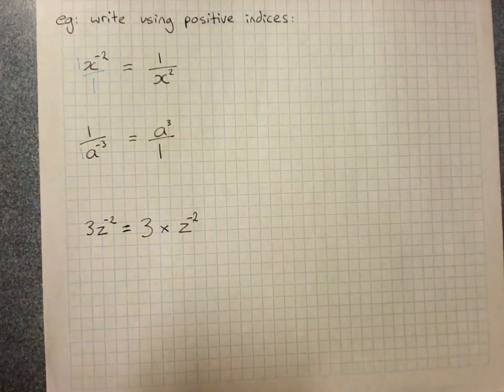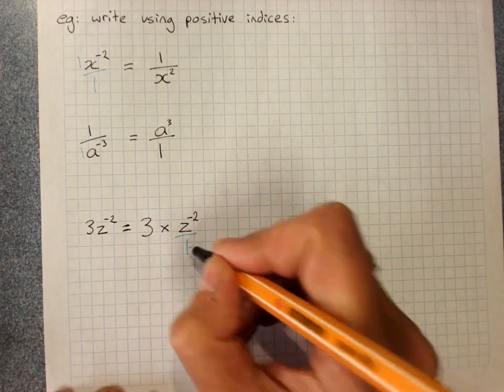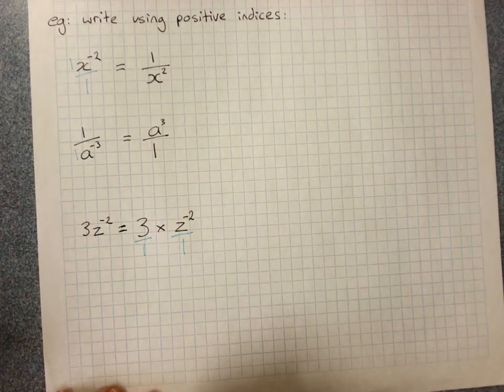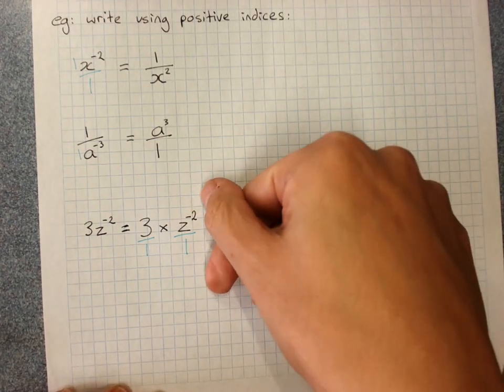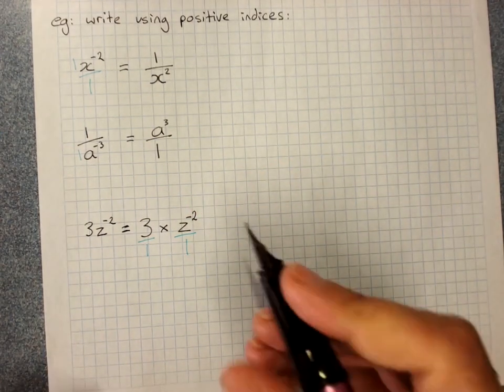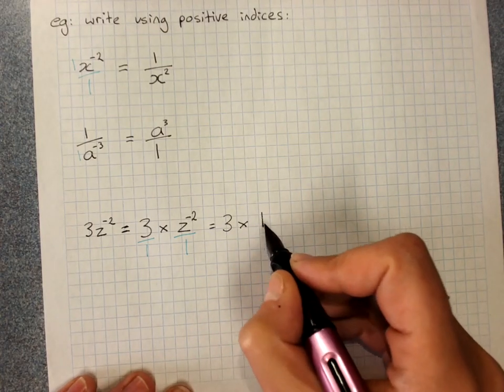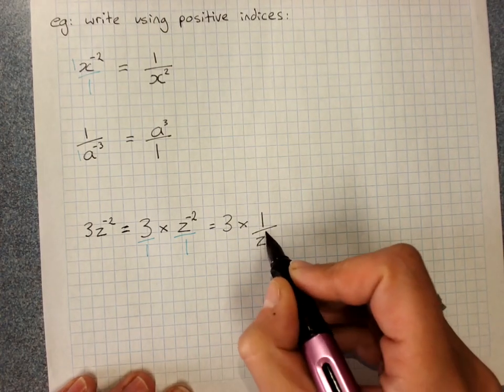If we are being very careful, we remember that this is over 1. If we're multiplying by a fraction, we can say this is over 1 as well. Take your positive reciprocal. We will have 3 times 1 over z squared.